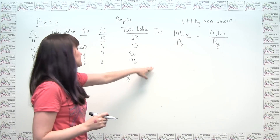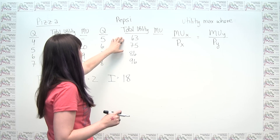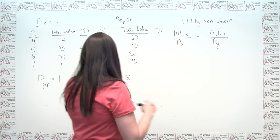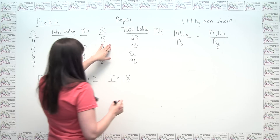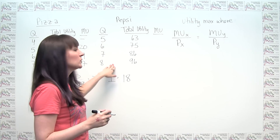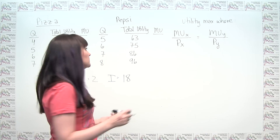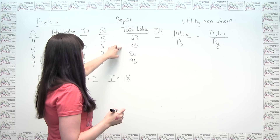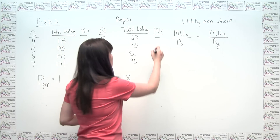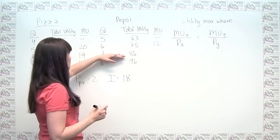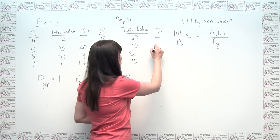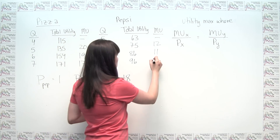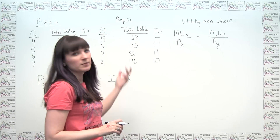We can do the same thing for Pepsi. Again, quantity increments by one each time, so we take the differences. The marginal utility of the 6th Pepsi is 75 minus 63, which is 12. The marginal utility of the 7th Pepsi is 86 minus 75, which is 11. And the marginal utility of the 8th Pepsi is 96 minus 86, which is 10. So we see diminishing marginal utility for Pepsi as well, which makes sense.